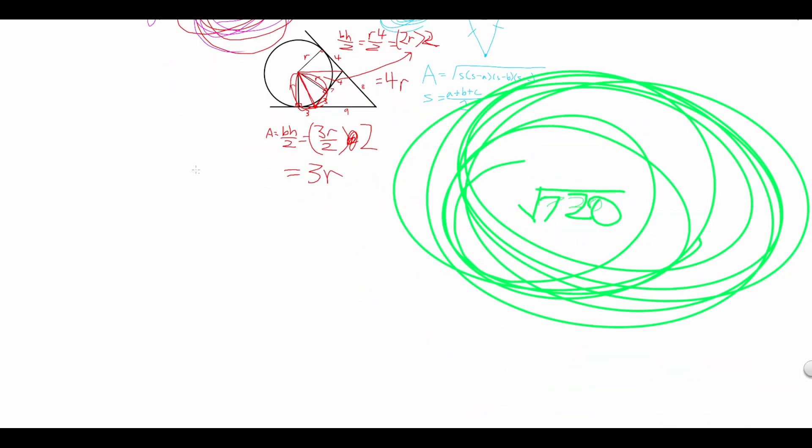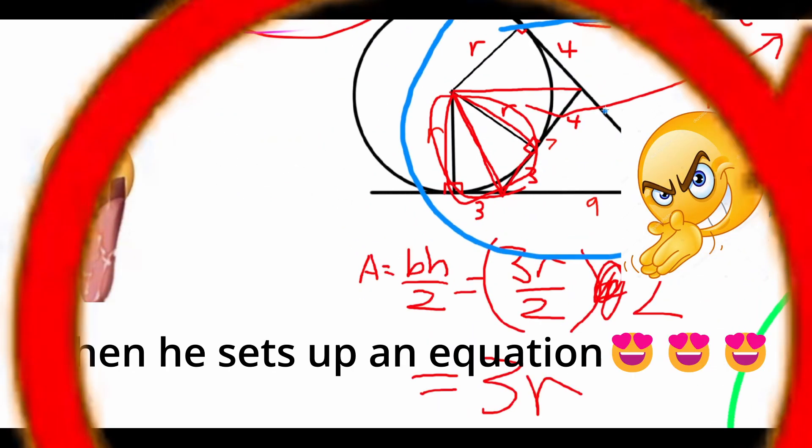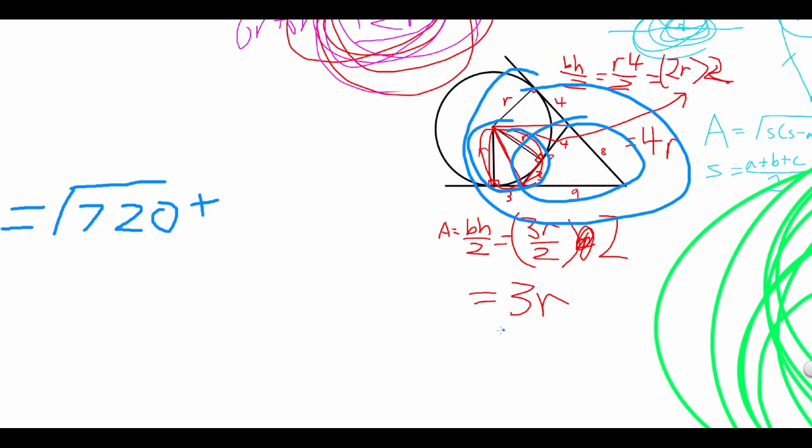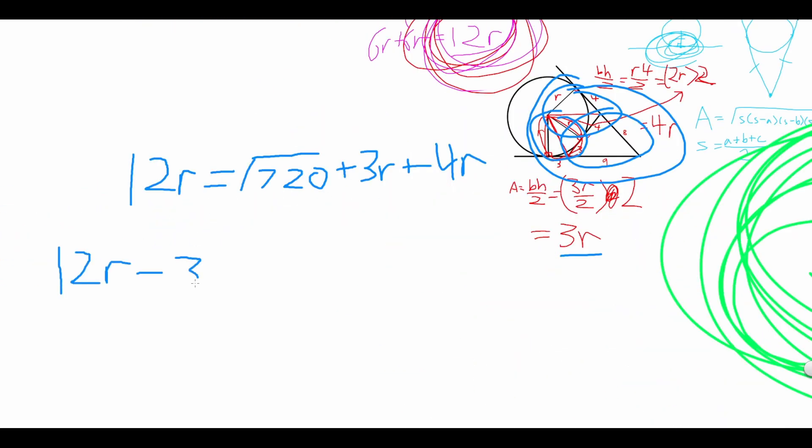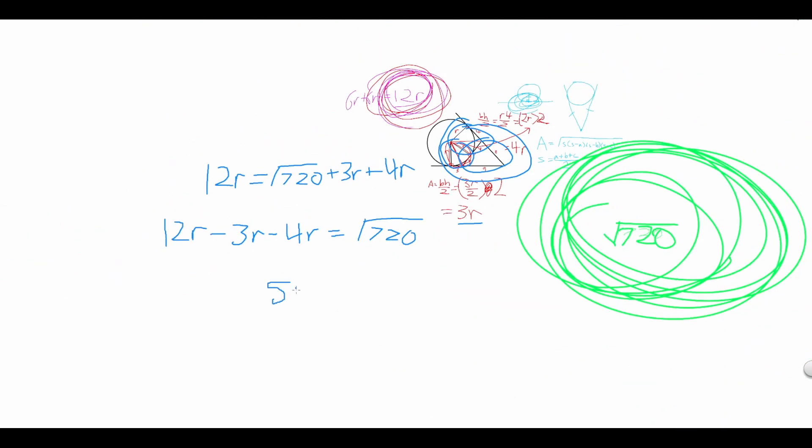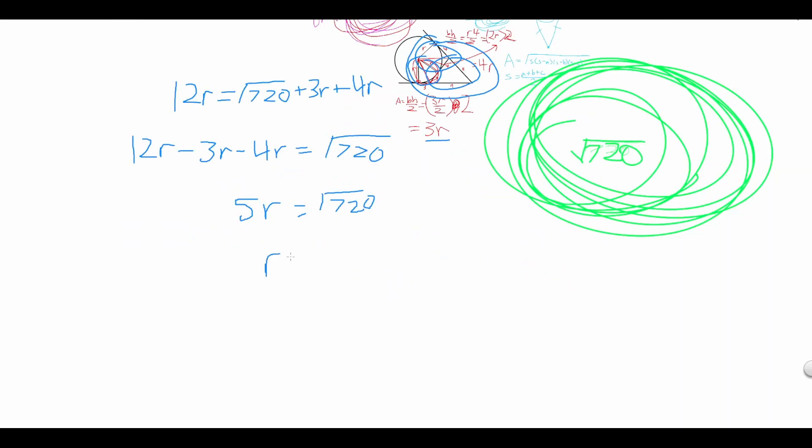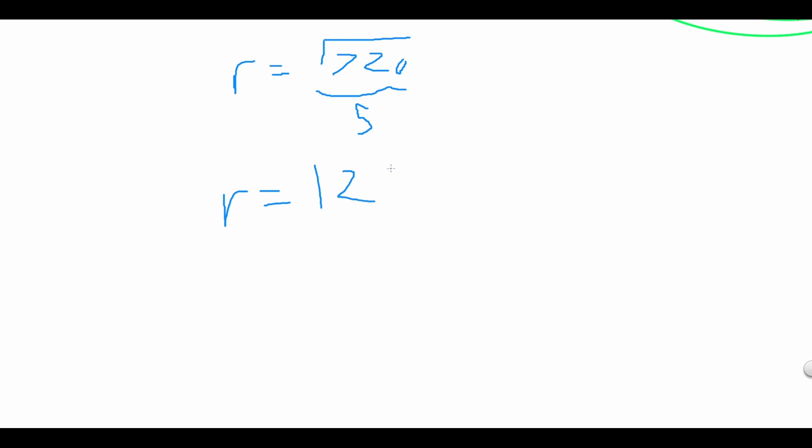And equating these areas, we get an equation. 12R is equal to root 720 plus 3R plus 4R. Push all the R's to one side of the equation, and we get 5R is equal to root 720. Now we divide both sides by 5 and simplify the root number. This leaves us with a radius.